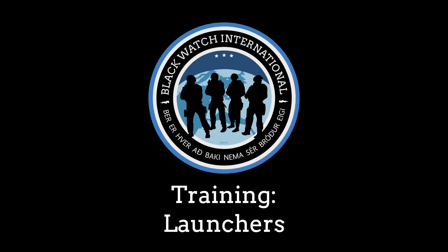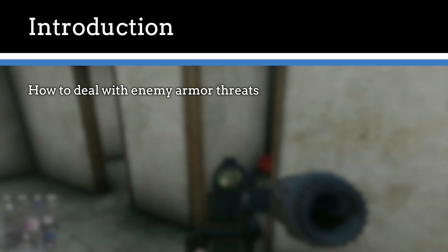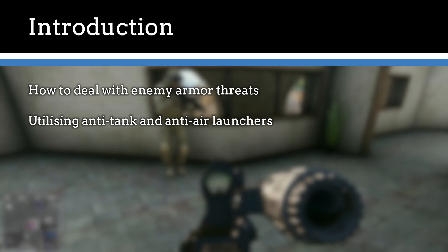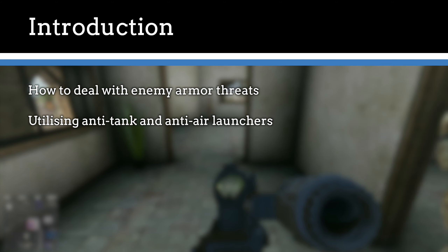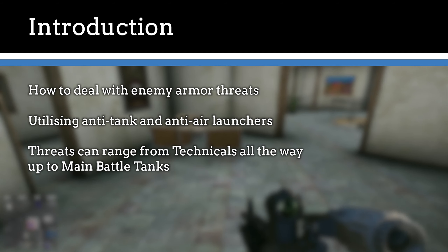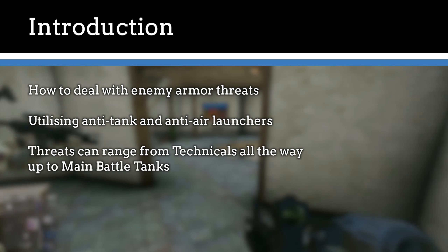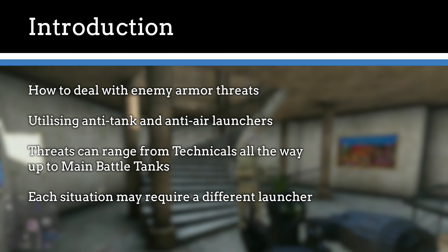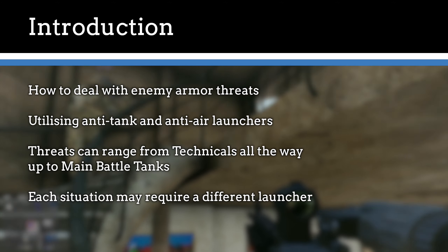Hello and welcome to Blackwatch International. My name is Kaitlin and in this training video we'll be looking at the anti-tank and anti-air launchers currently in use in our operations. During an operation you are expected to deal with any threats that might arise on the battlefield. Arguably one of the biggest threats are hostile vehicles both on land and in the air. These can come in many different shapes and sizes, from a simple jeep with a mounted machine gun all the way up to main battle tanks and helicopter gunships. Today we'll be looking at the different categories of launcher as well as examining how to properly use them.